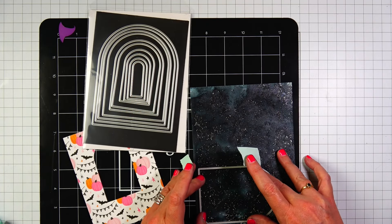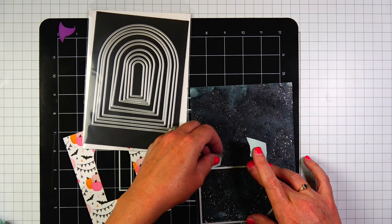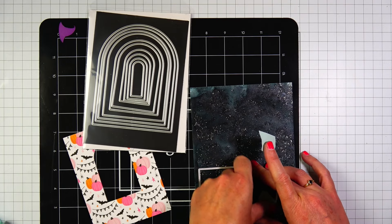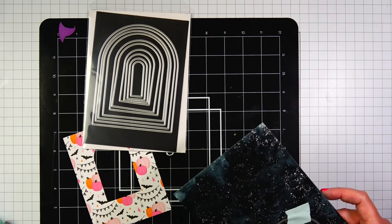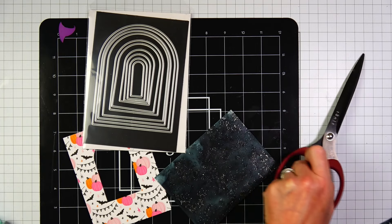I used an A2 arch to die cut a window and then I'm going to use a larger arch to die cut the back of the window out of that black paper we just made.